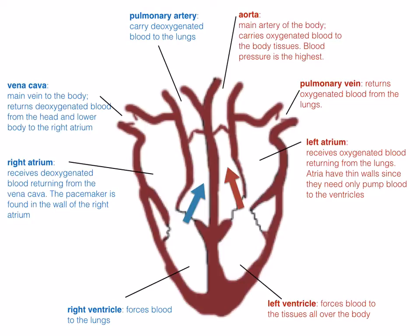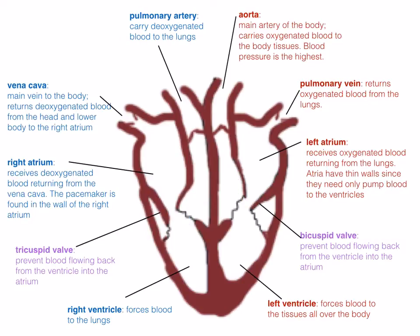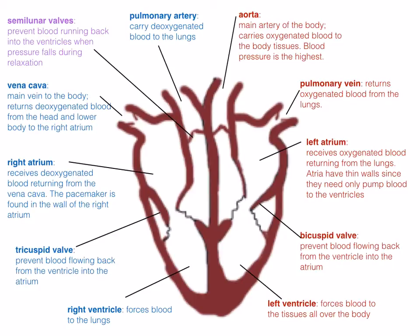Can you remember the names of the different valves? On the right, you've got the tricuspid valve — this prevents blood flowing back from the ventricle into the atrium. On the left, you've got the bicuspid valve, which also prevents blood flowing back from the ventricle into the atrium. The last valves are the semilunar valves, found in the arteries — these prevent blood running back into the ventricles when pressure falls during relaxation. And the septum separates the two sides of the heart.